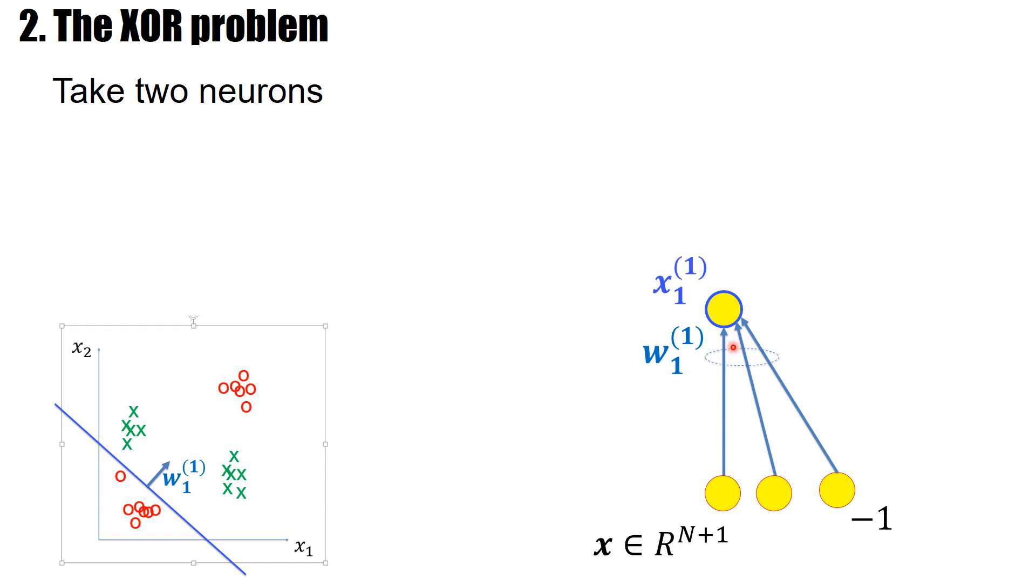Now let's add a second neuron, which has a second output. The notation is that this is the output in the first layer, in the first hidden layer, because it's not yet the output layer. And this is neuron 2, whereas this is neuron 1. So neuron 2 can also implement a hyperplane. And we choose for neuron 2 the hyperplane here.